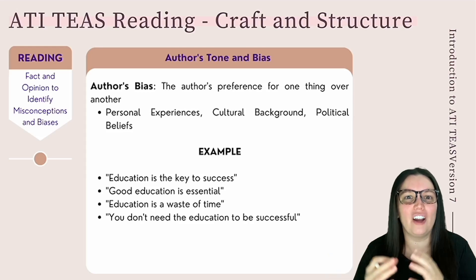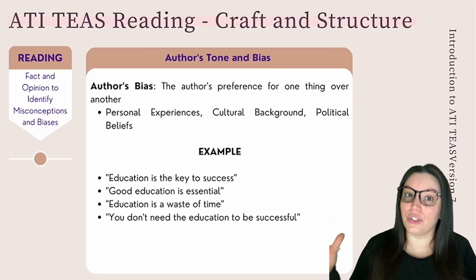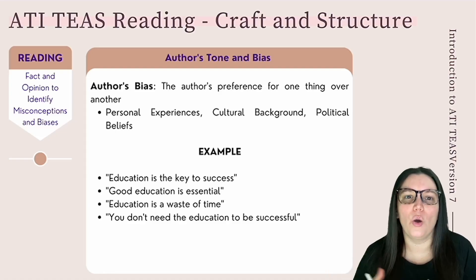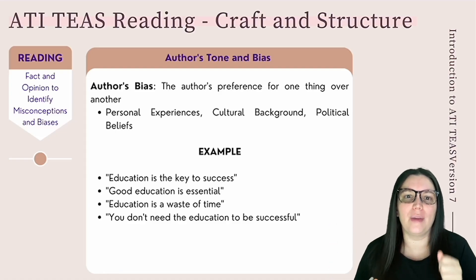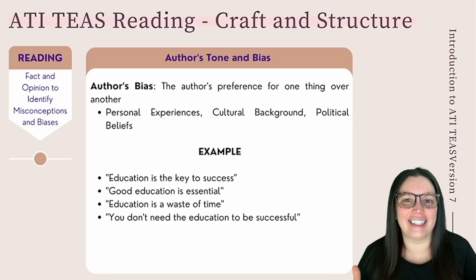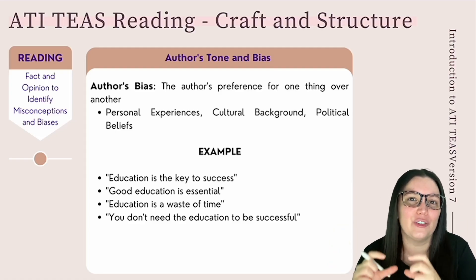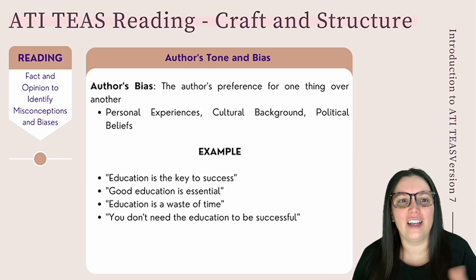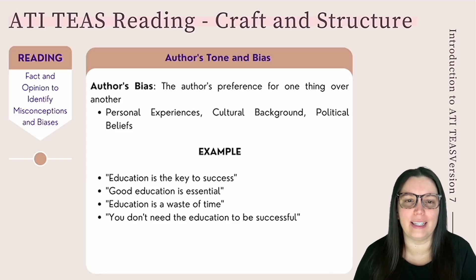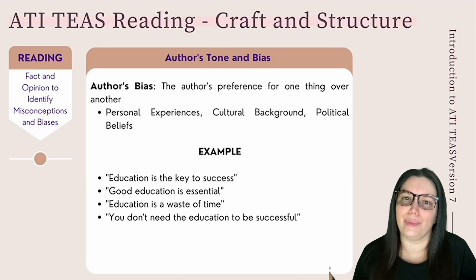Author bias is when an author shows a preference towards one thing or another, based on their personal experiences, cultural background, or political beliefs. For example, an author might be biased towards education because they believe it is the key to success — identifiable through phrases like 'education is the key to success' and 'a good education is essential.' On the other hand, an author might show negative bias, using phrases like 'education is a complete waste of time' and 'you don't need education to be successful.'